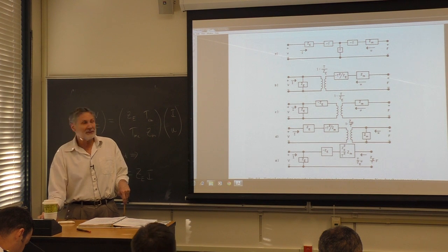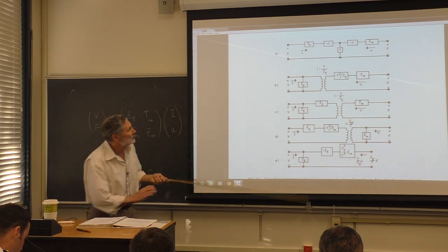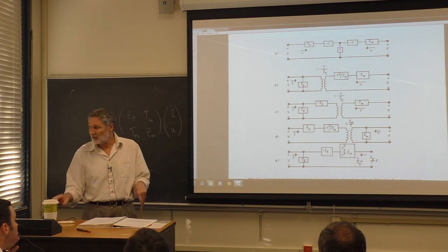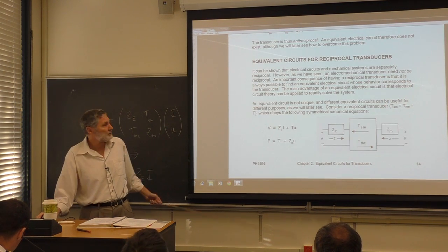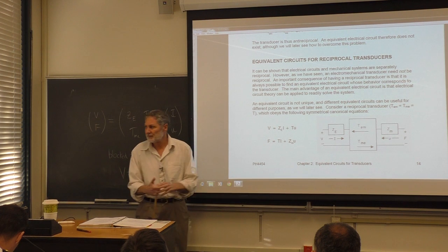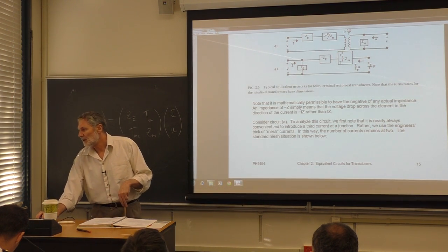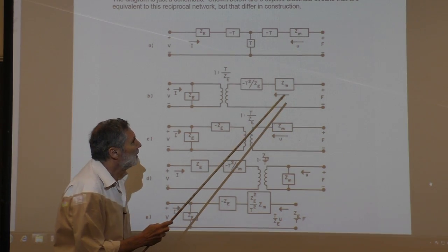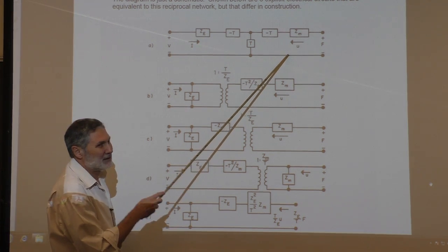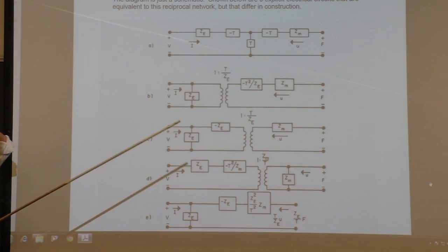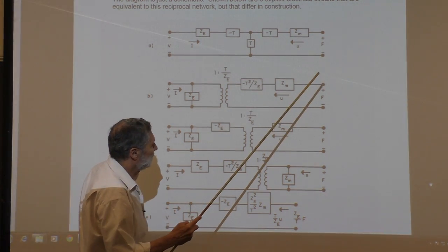We'll prove the first equivalent circuit is valid. It's a fully electrical circuit, and we need to use Kirchhoff's laws to show it reproduces the canonical equations. For the current directions, rather than thinking like physicists and introducing new unknown variables, we use what engineers call mesh currents.